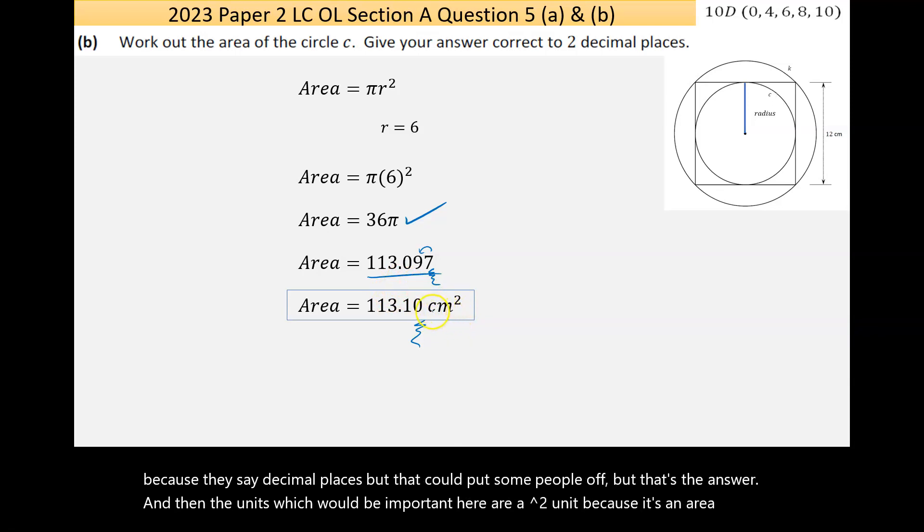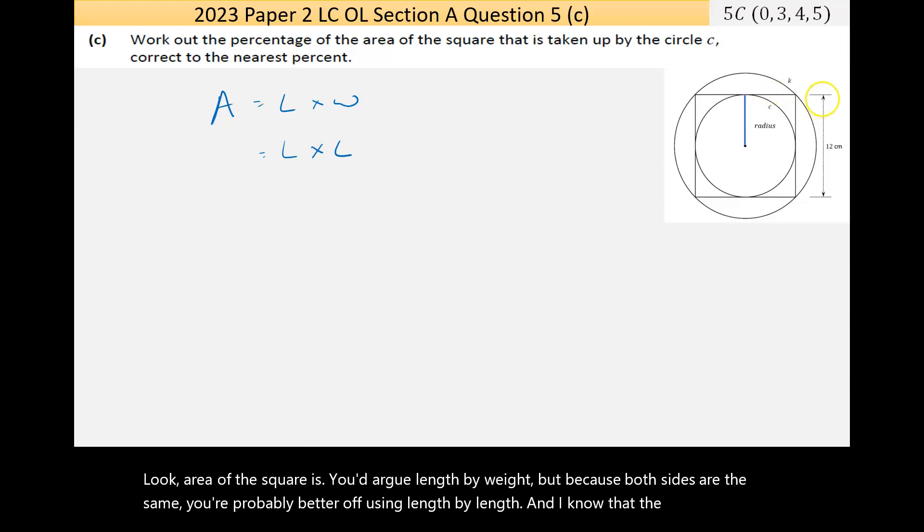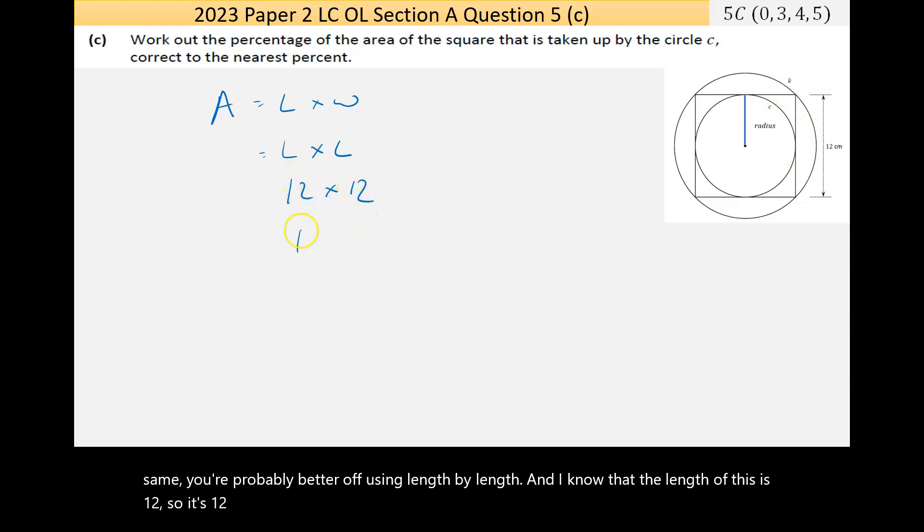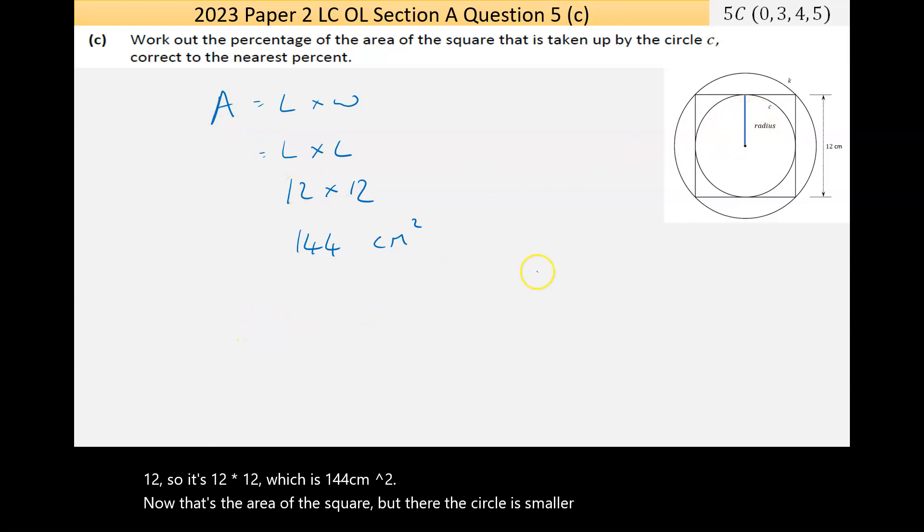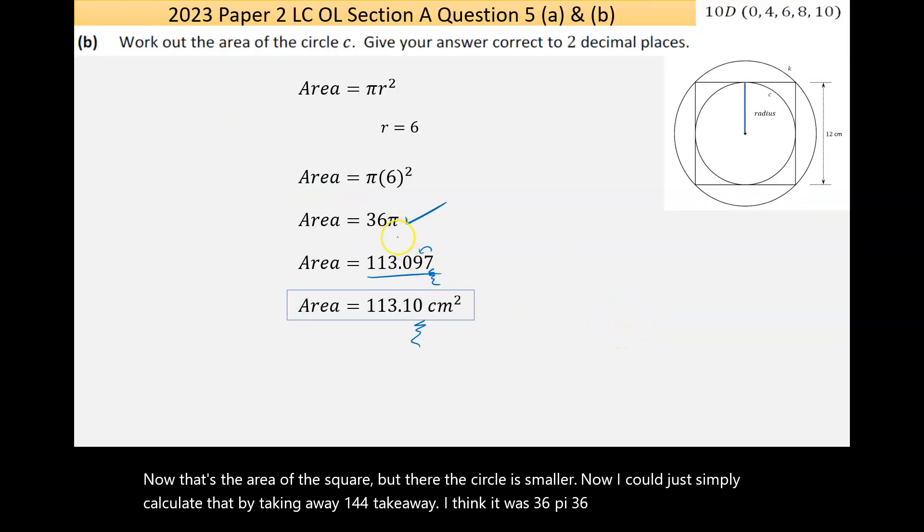Now part C says work out the percentage of the area of the square that is taken up by the circle. Well, the area of the square is you'd argue length by width, but because both sides are the same you're probably better off using length by length, and I know that the length of this is 12, so it's 12 times 12 which is 144 centimeters squared. Now that's the area of the square but the circle is smaller. Now I could just simply calculate that by taking away 144, take away I think it was 36π. Now 36π won't have any error in rounding because it's not rounded.